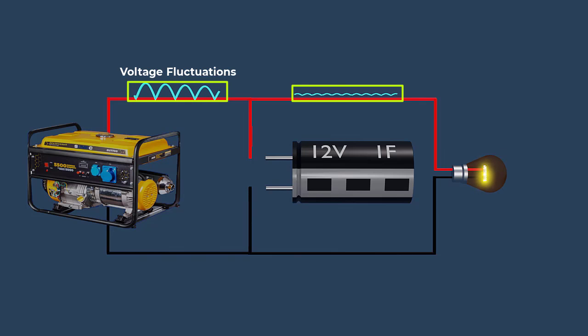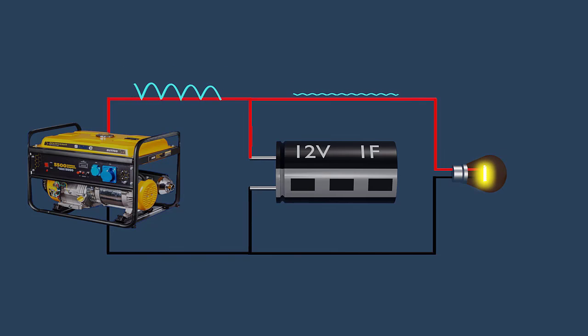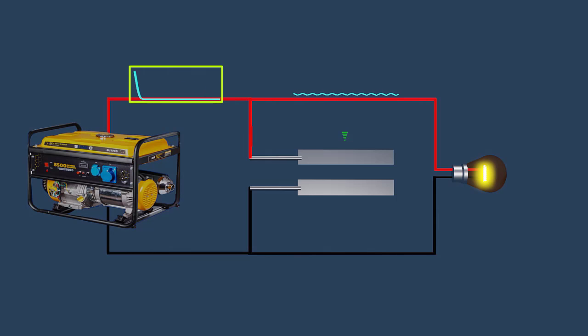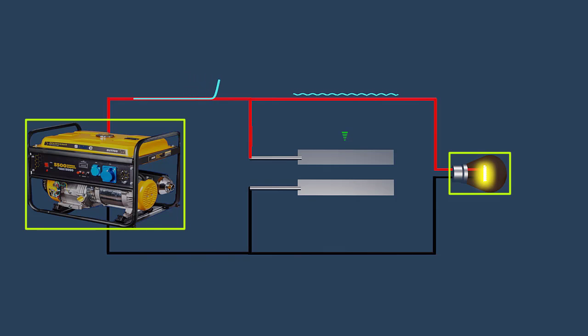To smooth out these fluctuations, we can use a capacitor. The capacitor charges and discharges in response to the voltage changes. During periods of high voltage, the source powers the bulb, and the capacitor rapidly charges, absorbing excess energy and preventing the voltage from rising too high.